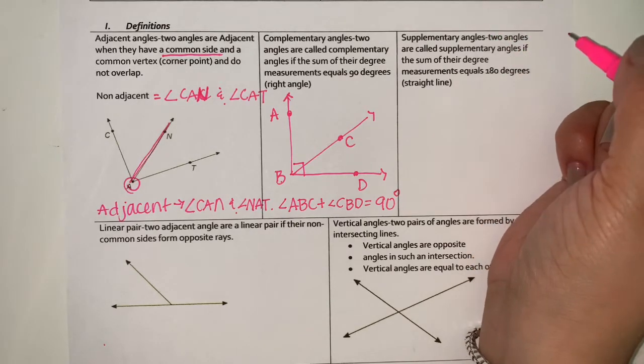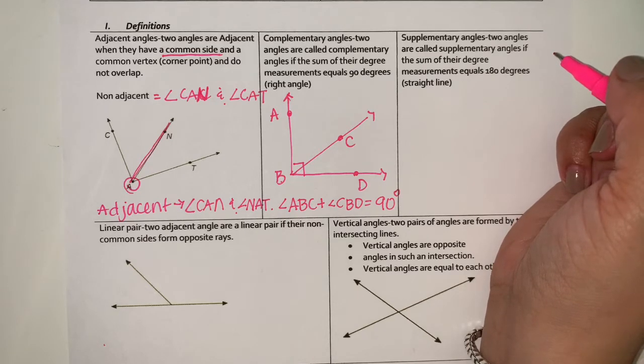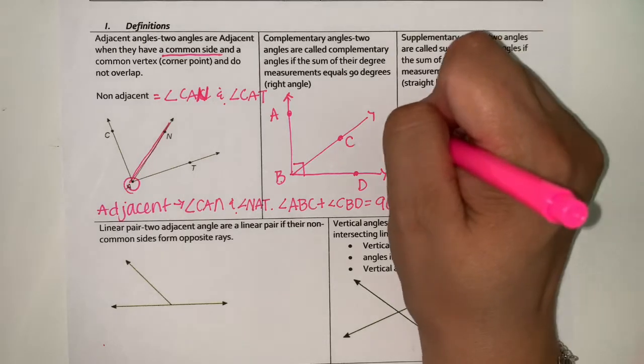You have supplementary angles. Two angles are called supplementary angles if the sum of their measurements equals 180 degrees. So we know it's going to be a line.